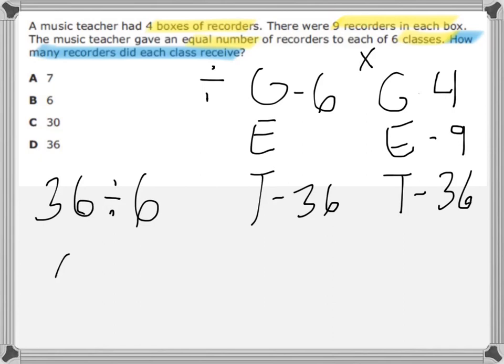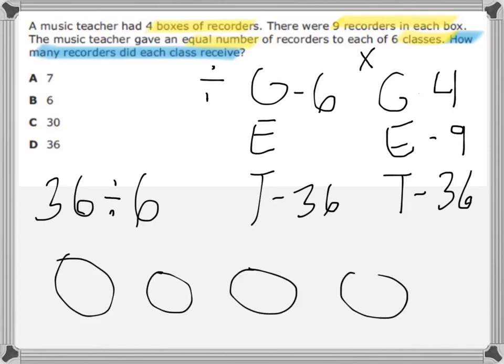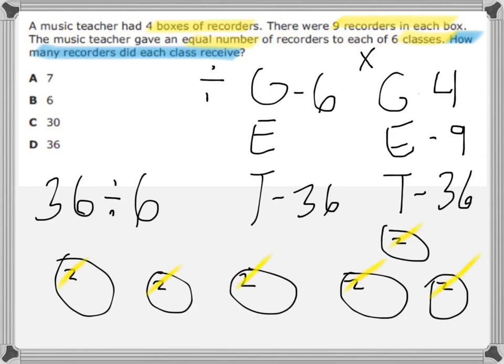I'm going to make six circles to represent my six classes that he's splitting his recorders equally to. Instead of going one at a time, I'm going to count by two to make it easier. I'm trying to get to my total of thirty-six. So, if I put two in each group, that gives me two, four, six, eight, ten, twelve.